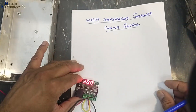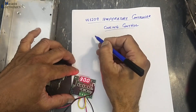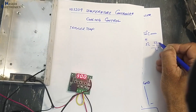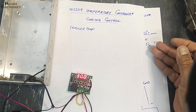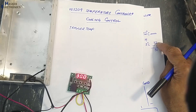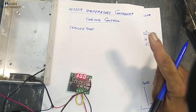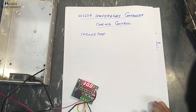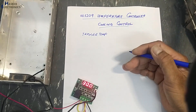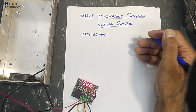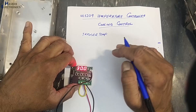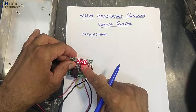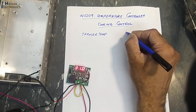Today we will program it for cooling operation. We will set the trigger temperature. The difference from heat mode: in heat mode, when temperature rises and touches the limit, it turns off the heater. In cooling mode, when the temperature drops to the lower limit, it turns off the cooler.